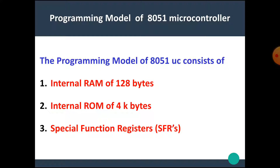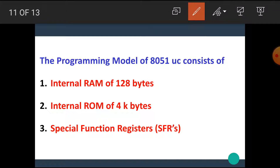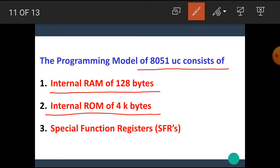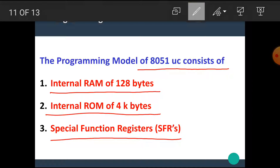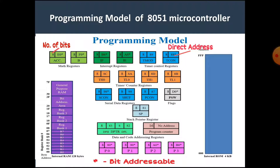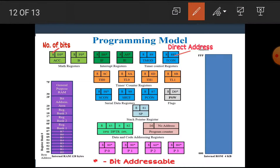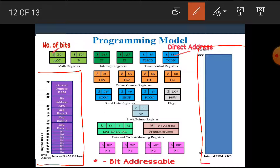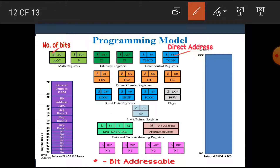Now let's see the programming model of the 8051 microcontroller. The programming model consists of the internal RAM of 128 bytes, internal ROM of 4KB, and special function registers (SFRs). In this diagram, one part represents internal RAM and another part represents internal ROM. We know the 8051 has 128 bytes of internal RAM and 4KB of internal ROM. Now let's see the SFRs.